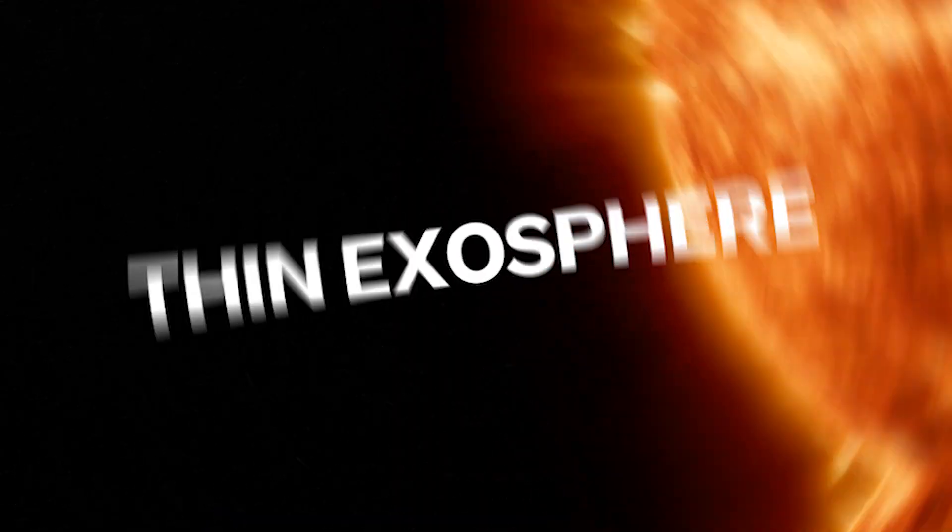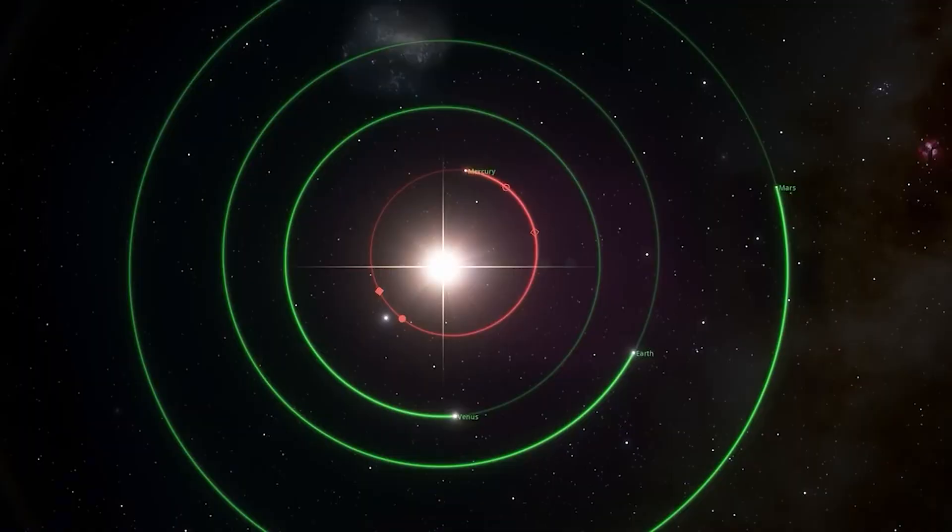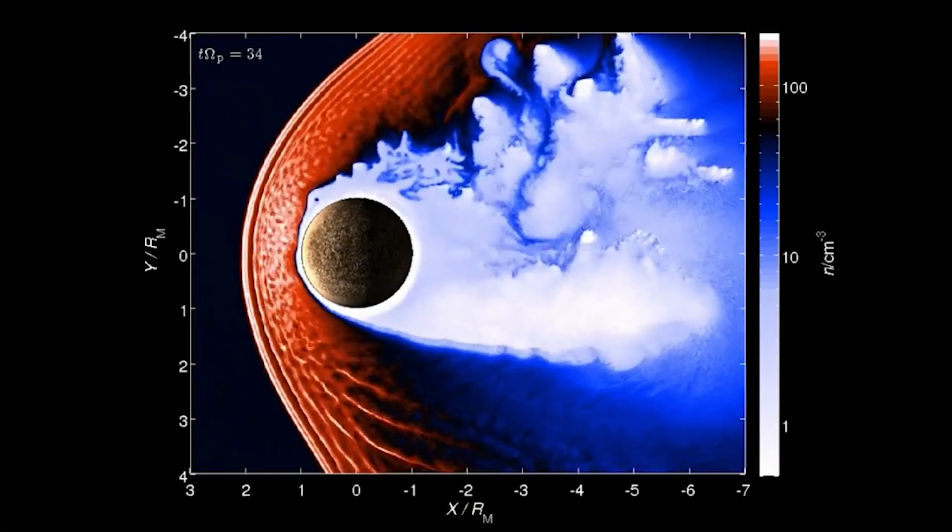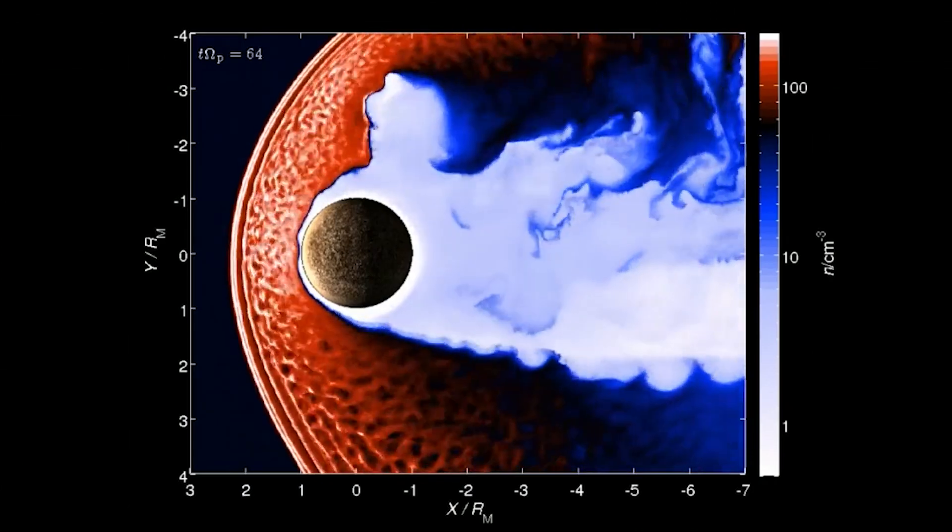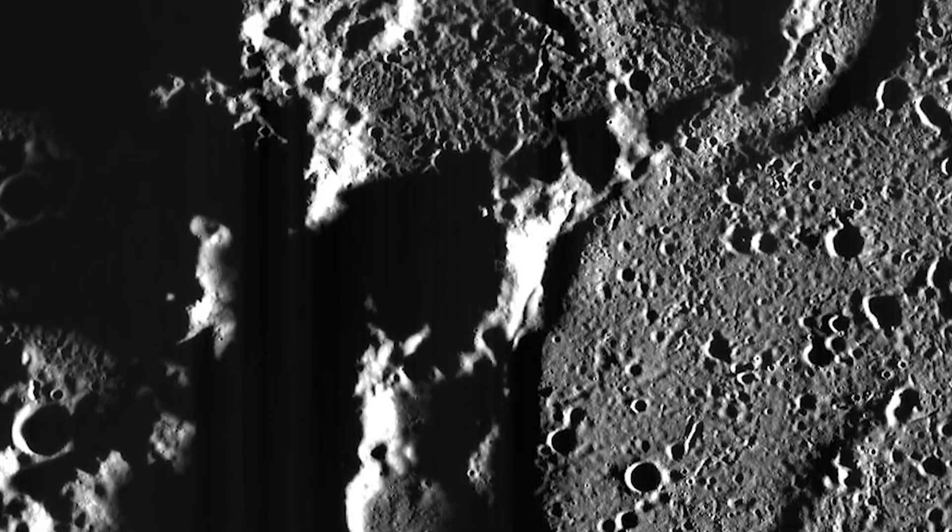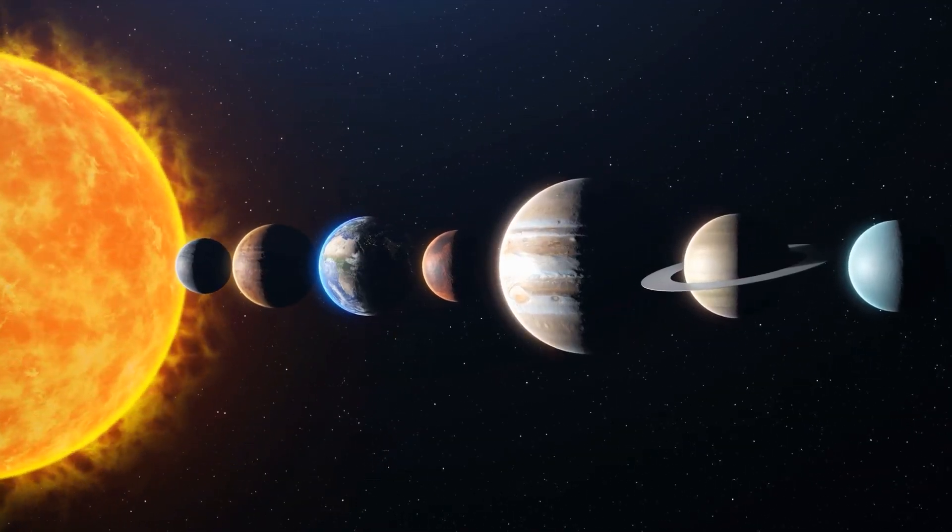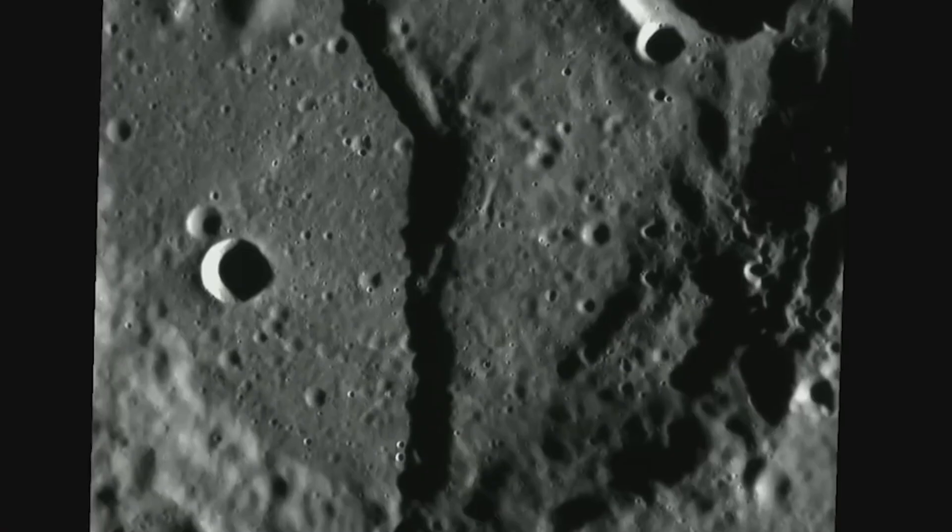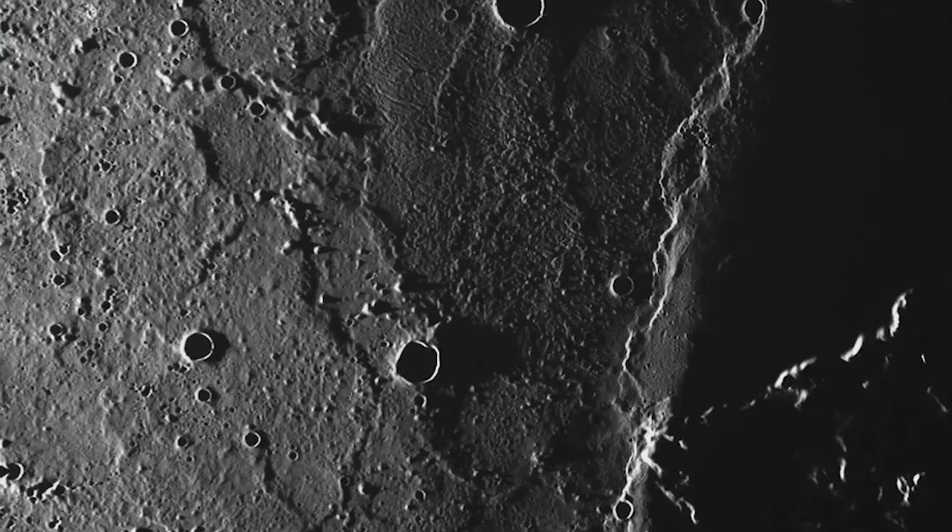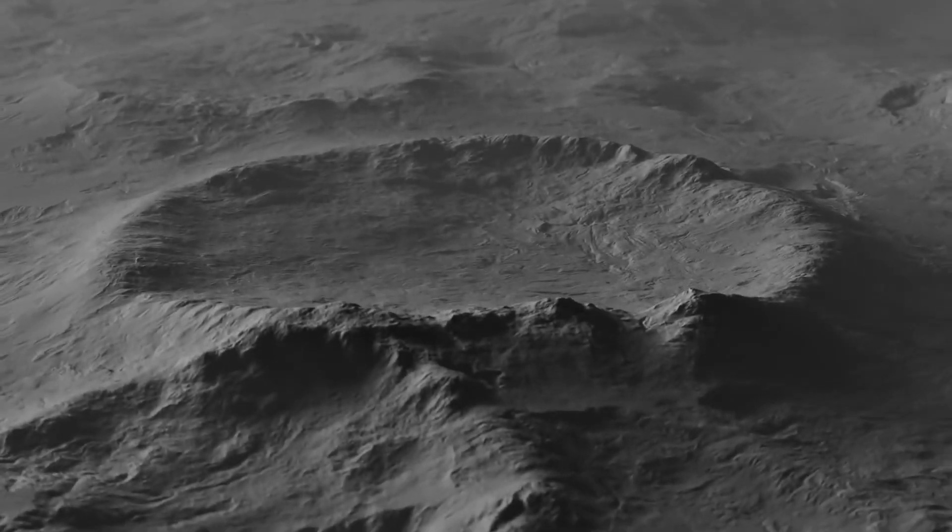Thin Exosphere. Mercury boasts yet another astonishing feature, its incredibly thin exosphere. An exosphere is the outermost layer of an atmosphere, and on Mercury, it's a mere wisp. Unlike the dense atmospheres of Earth or even Mars, Mercury's exosphere is sparse and primarily composed of atoms like hydrogen, helium, and traces of other elements.